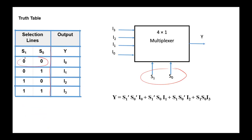If the select lines are 0,0 then I0 will be transferred to the output. If 0,1 then I1 will be transferred. If 1,0 then I2 will be transferred. And finally if 1,1 then I3 will be transferred to the output. From the truth table, Y equals I0·(not S1)·(not S0) or I1·(not S1)·S0 or I2·S1·(not S0) or I3·S1·S0. Here is the Boolean expression for the output Y.